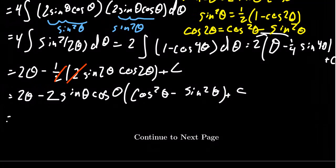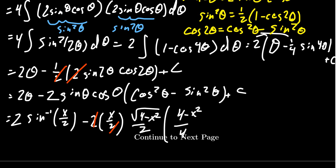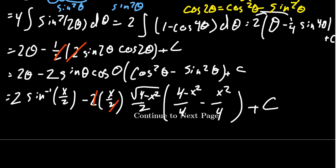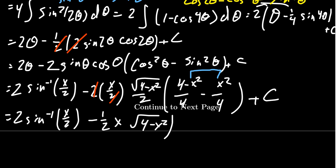Theta becomes sine inverse of x over 2. Sine theta becomes x over 2. Cosine theta becomes the square root of 4 minus x squared over 2 — note that the 2s cancel. Cosine squared gives (4 minus x squared) over 4, and sine squared gives x squared over 4 plus a constant. Combining, we get 2 sine inverse of x over 2 minus one half x times the square root of 4 minus x squared, then plus (4 minus 2x squared) over 4 plus a constant.